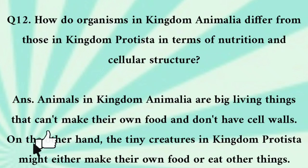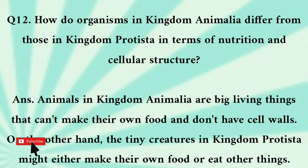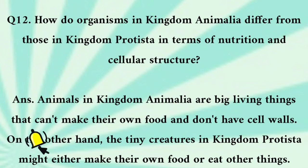How do organisms in kingdom Animalia differ from those in kingdom Prokaryotae in terms of nutrition and cellular structure? Animals in kingdom Animalia are large living things that cannot make their own food and do not have cell walls. On the other hand, the tiny creatures in kingdom Protista might either make their own food or eat other things.